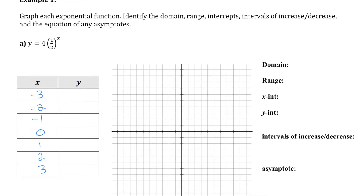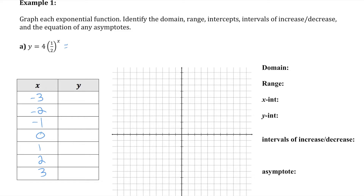Let me start by substituting negative three for x. So I would have four times a half to the power of negative three. Knowing my exponent rules, I know that's the same as doing four times two to the positive three, which is four times eight, which is 32. So my first y value is 32.